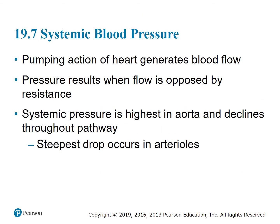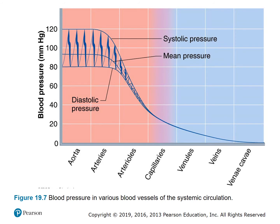Systemic blood pressure: the pumping action of the heart generates blood flow; pressure results when flow is opposed by resistance. Systemic pressure is highest in the aorta and declines throughout the pathway. The steepest drop occurs in arterioles because of their decreasing diameter. This is illustrated in figure 19.7, showing blood pressure in various blood vessels of the systemic circulation — very high in the aorta with a drop by the time it reaches the vena cava.